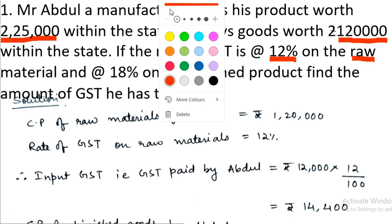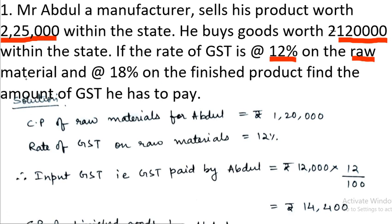He was paying 12% GST on raw material and 18% GST on finished product. So what is finished product? Whatever you sell, you call it the finished product. And what you buy to make it, you call it raw material.